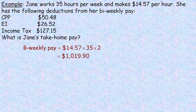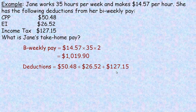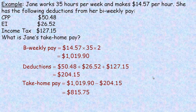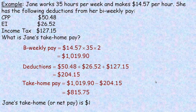Now we want to calculate her deductions. We would add the three together: the CPP, the EI, and the income tax. Adding those three amounts together, her standard deductions are $204.15. So to get her take-home pay — or net pay — we would take her gross income of $1,019.90 and subtract the $204.15 from that. So her take-home pay, the number that's going to be on her check, is $815.75. That is her take-home or net pay.